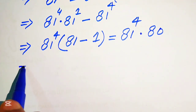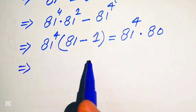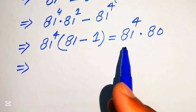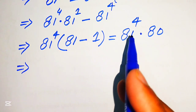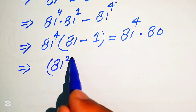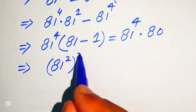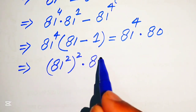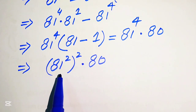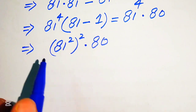In the next step, we rewrite 81 to the power of 4 by breaking the exponent. We write it as 81 squared, whole squared — that is (81^2)^2 — and it is multiplied by 80. So here we first need to simplify 81 squared and then square the result.